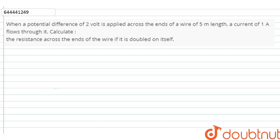The question is: when a potential difference of 2 volts is applied across the end of a wire of 5 meter length, a current of 1 ampere flows through it. Calculate the resistance in the wire when it is doubled on itself.